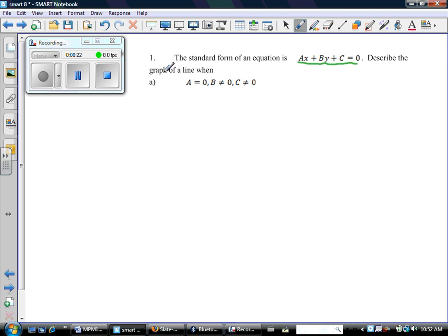It says describe the graph of a line when A equals zero, B does not equal zero, and C does not equal zero. So let's get some specific examples and try to figure out what this sort of graph would look like.